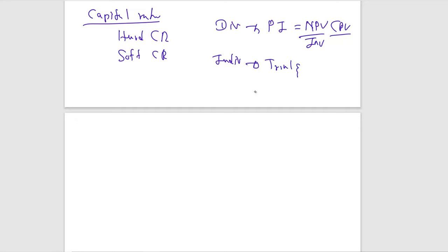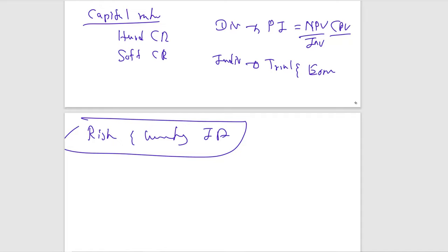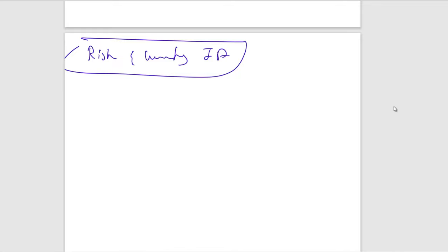Risk and uncertainty in investment appraisal arises because all calculations are based on expectations that may change. Methods to incorporate risk include expected values and probabilities. For joint probability calculations, step one is to identify all possible scenarios.